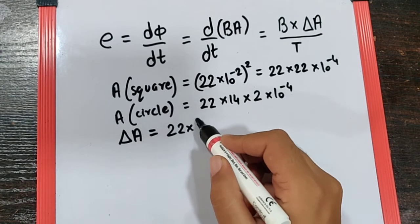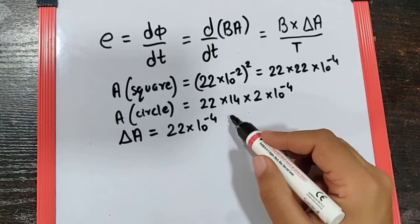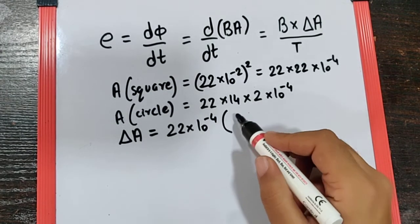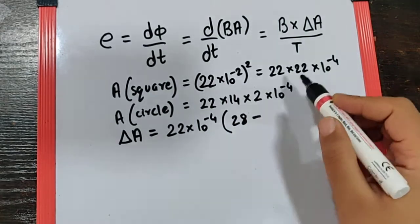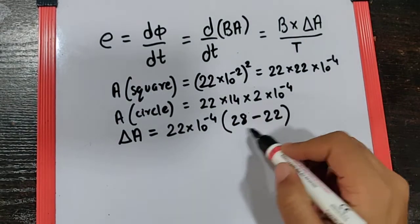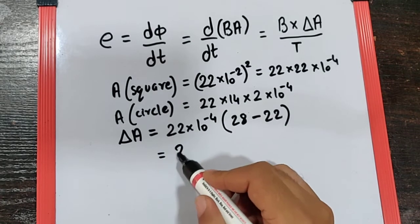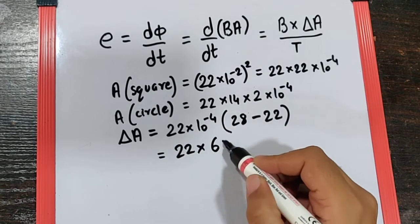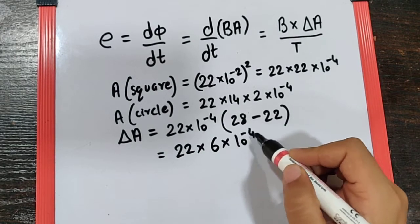Which means I can take 22 into 10 raise to minus 4 common. In the brackets we are left with 14 into 2, 28 minus 22 which is 6. So we get 22 into 6 into 10 raise to minus 4 as the change in area.